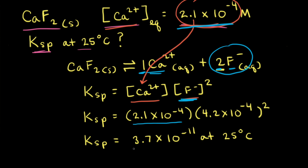When you do the math, you get that Ksp for calcium fluoride equals 3.7 times 10 to the negative 11th at 25 degrees Celsius. Ksp values can be difficult to measure, and different sources often give different values at the same temperature. For calcium fluoride at 25 degrees Celsius, one source had Ksp equal to 3.5 times 10 to the negative 11th, and another had 3.9 times 10 to the negative 11th, so our calculated value of 3.7 times 10 to the negative 11th is a pretty good result.